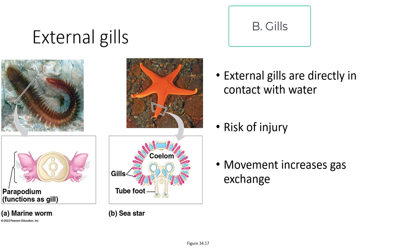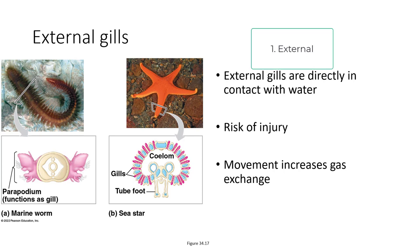Looking at different types of respiratory anatomy: first, external gills are directly in contact with external water. This does cause some risk of injury — though in sea stars the gills are well protected, and in sea urchins the spines protect the gills. Movement of the organism increases gas exchange, as does movement of the gills themselves outside the organism. Things like this marine worm will actually move their gills around.